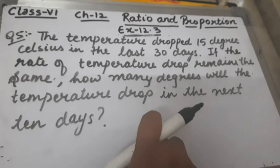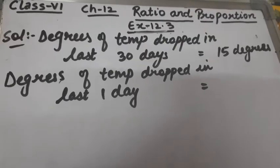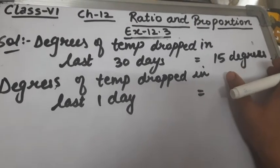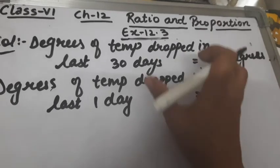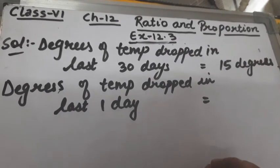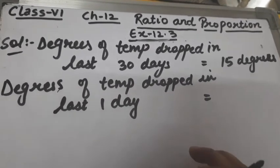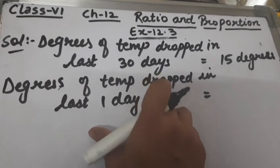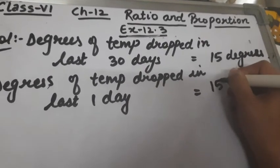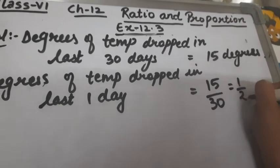This we have to find out. So let's start the solution. Degrees of temperature dropped in last 30 days is 15. We have to find how many degrees will the temperature drop in the next 10 days. First of all, we'll find the degrees of temperature dropped in one day, which is 15 upon 30, that is 1/2.